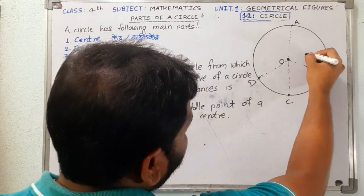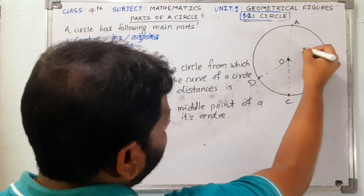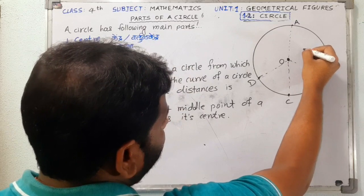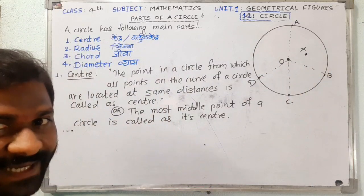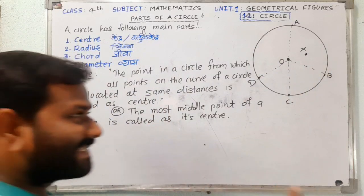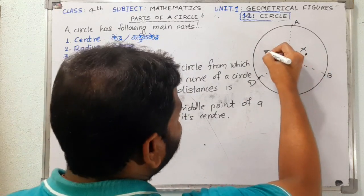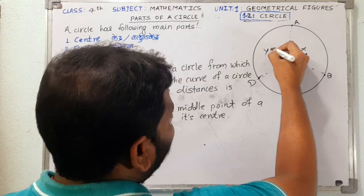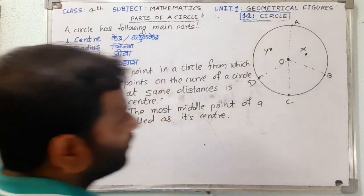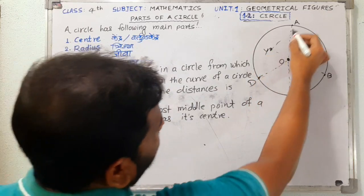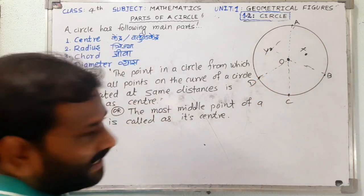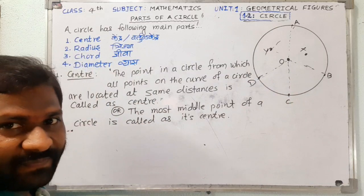Can a center be at another point? No. If point Y is taken as a center, then the distances from Y to the curve are not the same — so Y cannot be the center.